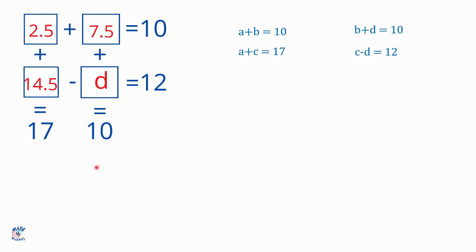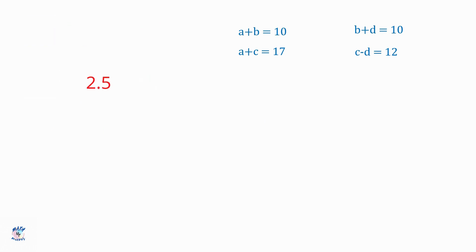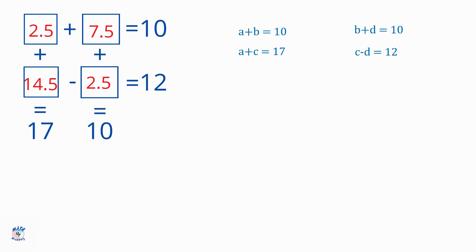So I got all the three numbers A, B, and C. We need to find D. I'm going to go to this equation: C minus D is equal to 12. I know C, which is 14.5, so I'm going to substitute C as 14.5 and find D. So C is 14.5, and then D will be 14.5 minus 12, which is 2.5. And so I got all these four unknown numbers in the box.